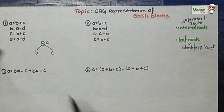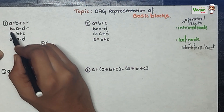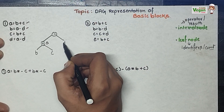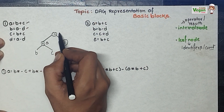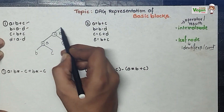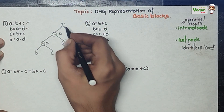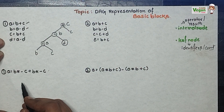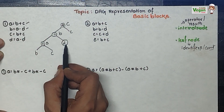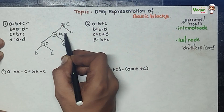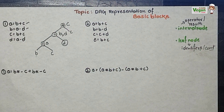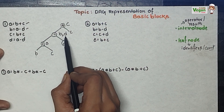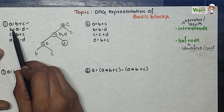Next, A minus D equals B. A is already here, minus D, so the result is B. Next, B plus C — result will be C. Next, D equals A minus D, but A minus D is already done, so I can write comma D. There's no need to represent it again. So B and D both will be having the same expression A minus D.